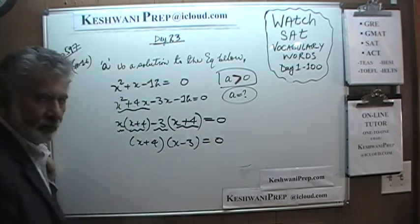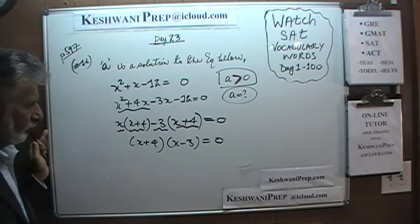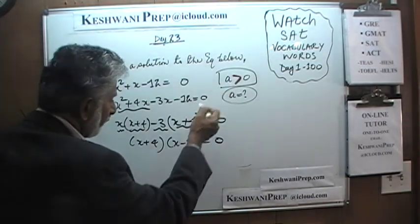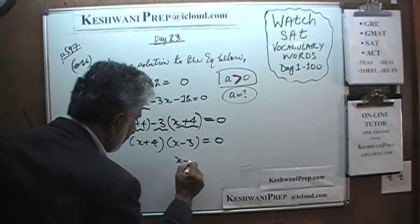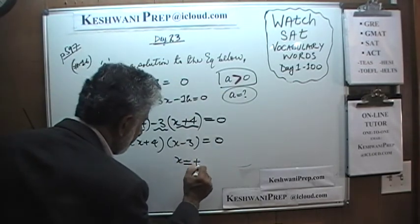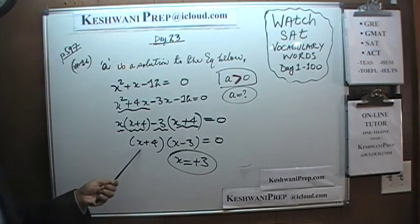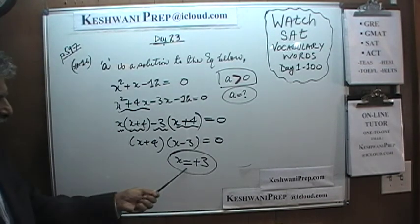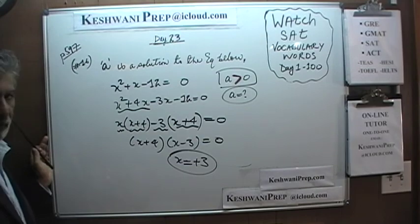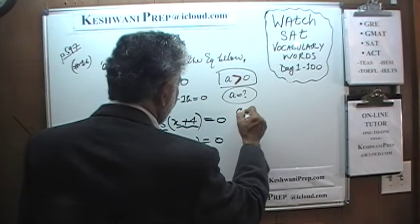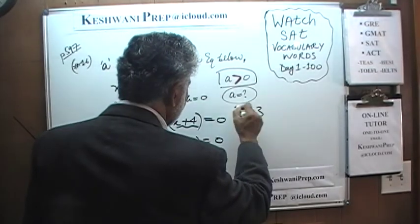Voila. So the positive root we are looking for is x equal to positive 3. We are not interested in the fact that x can also be negative 4. The question was: what is A equal to? And the answer is A is equal to 3.